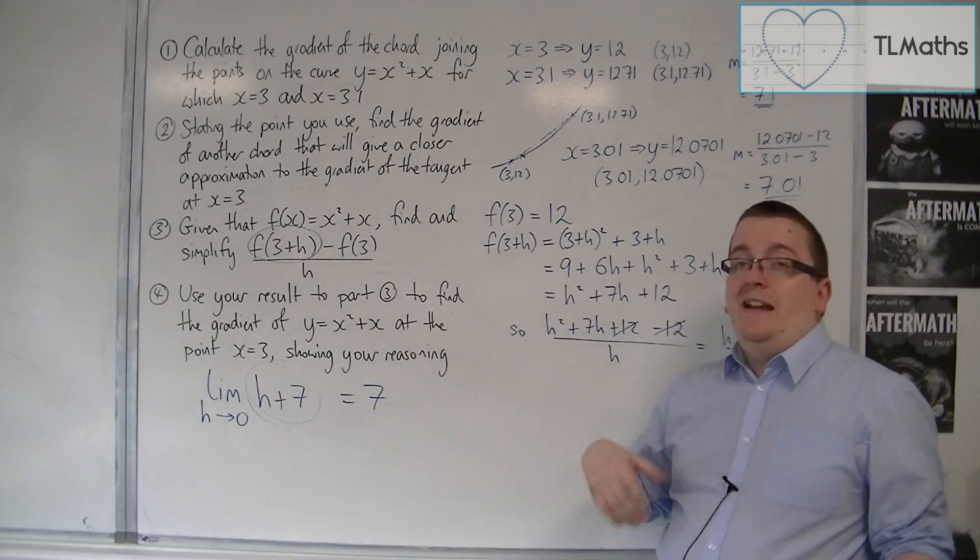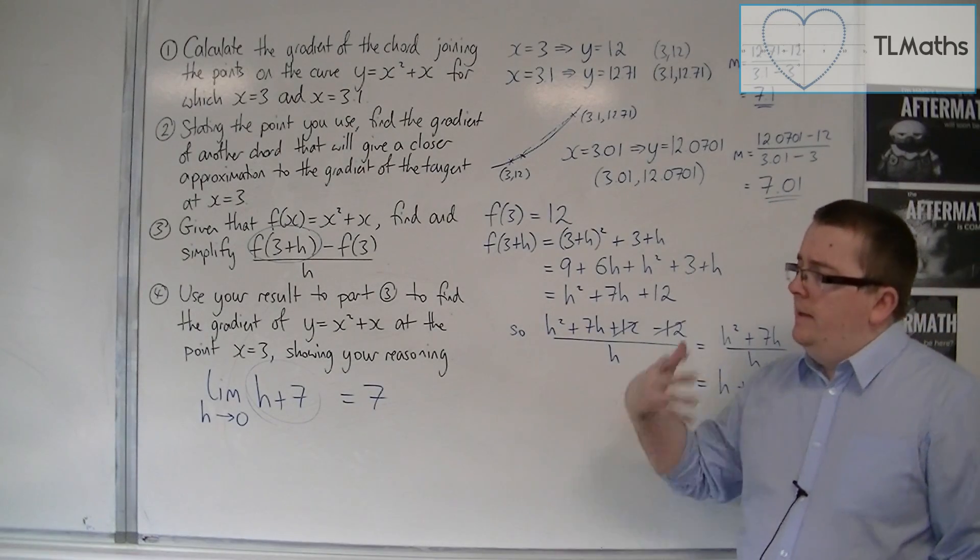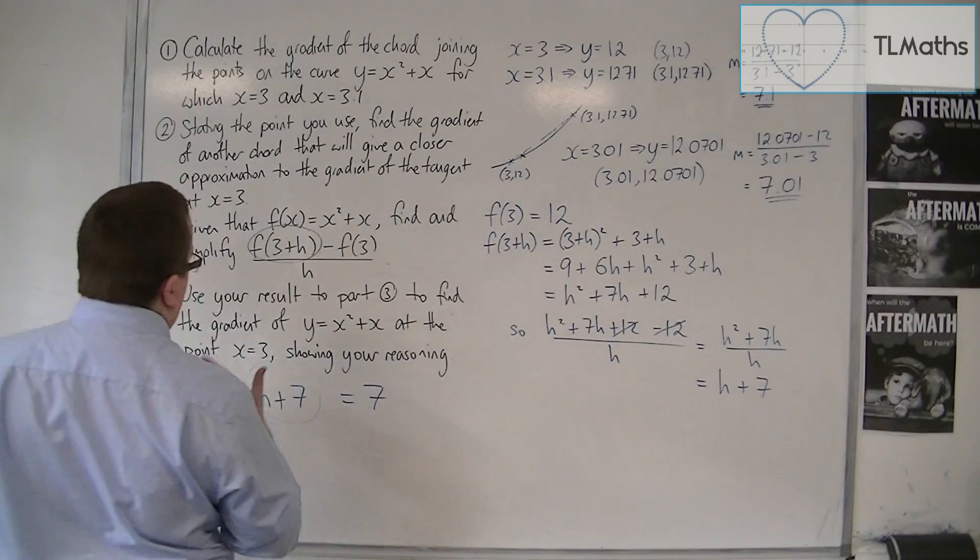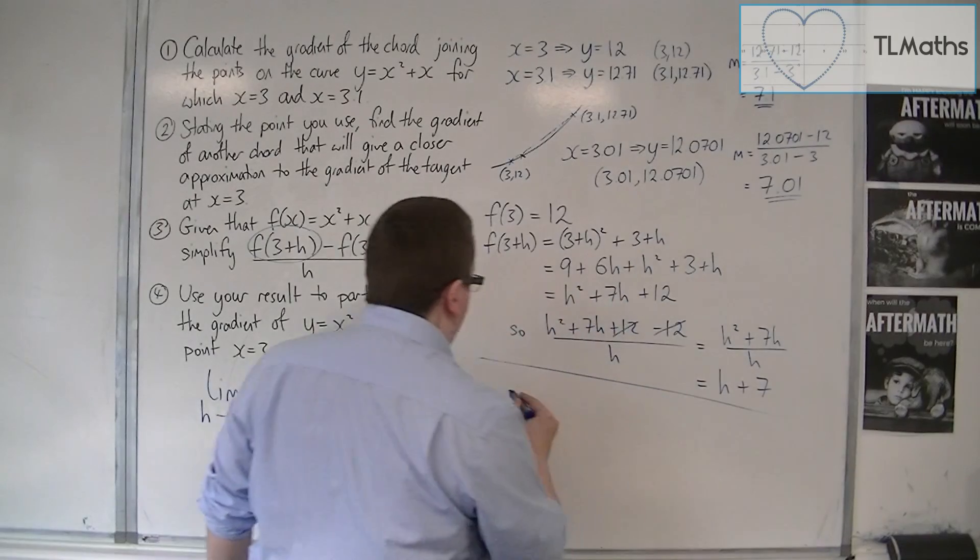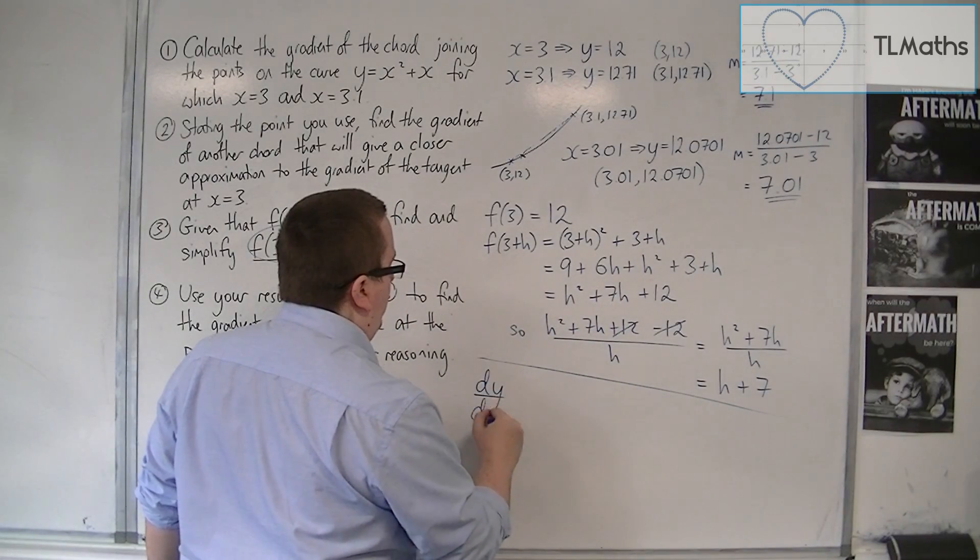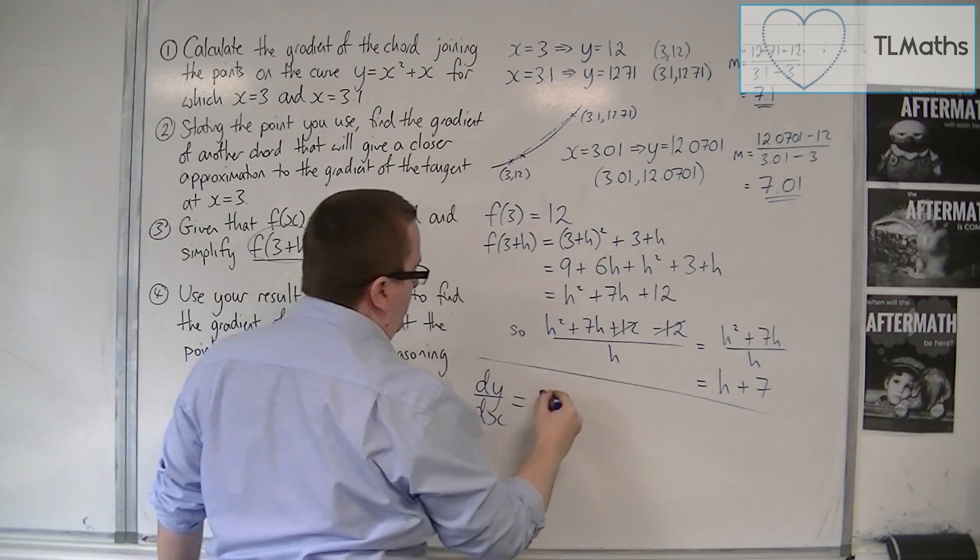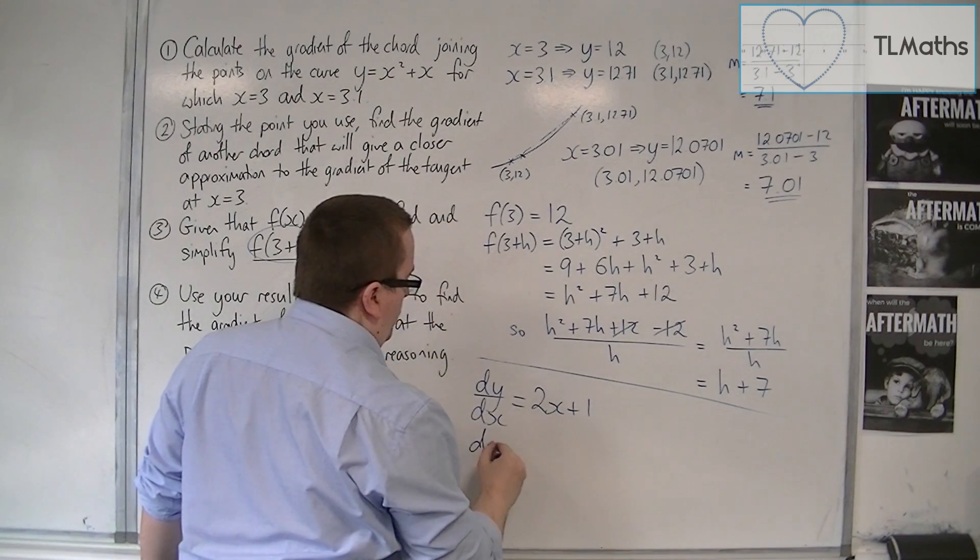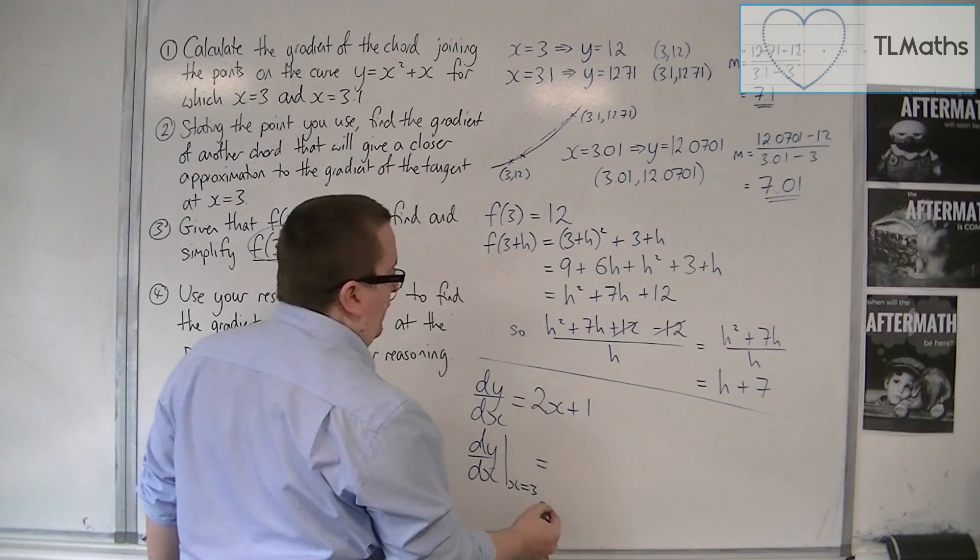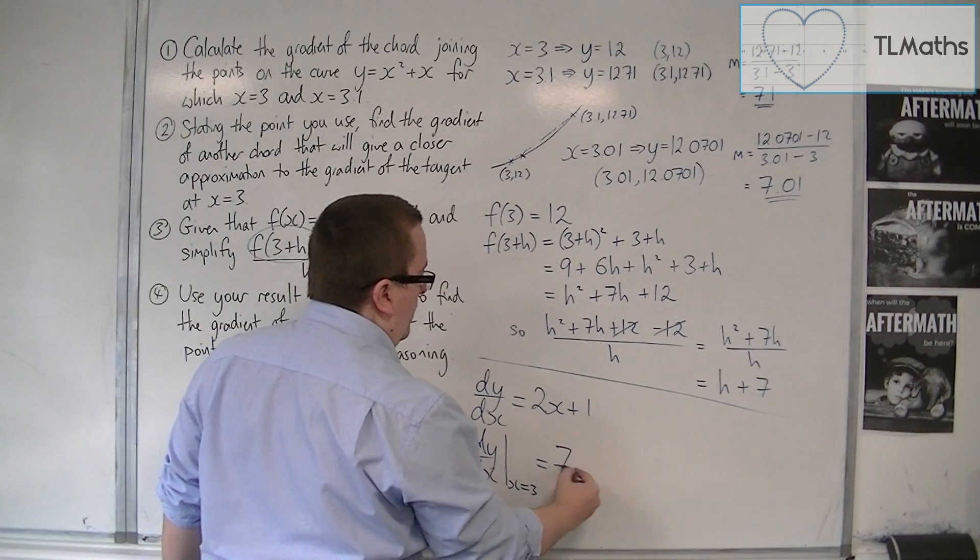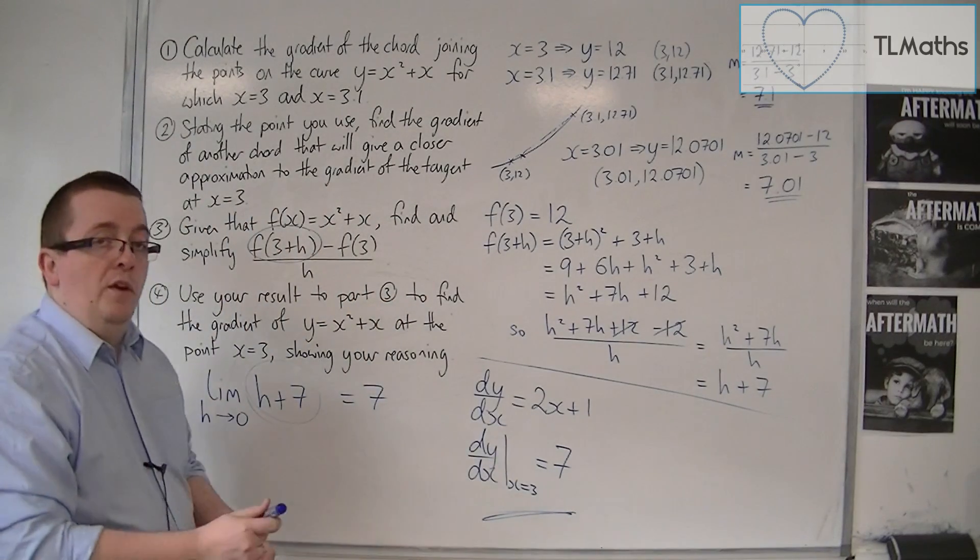Now, that would be the exam question. Now, for our own sake, let's have a look at using our usual form of dy by dx just to check that 7 is right. So we have y is equal to x squared plus x. So dy by dx would be 2x plus 1. And I would substitute in x is 3. So I want the gradient when x is 3, which is 2 lots of 3 plus 1, which is 7. So it confirms exactly what I have here.